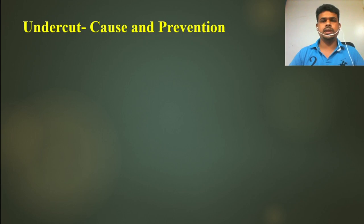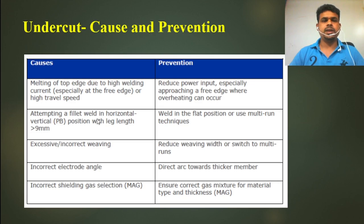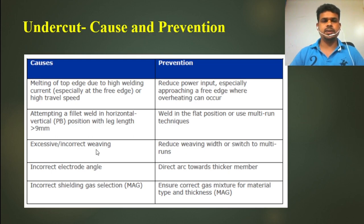What is the reason for undercut and how can we prevent it? Cause number one is due to high welding current, especially at the free edge, or high travel speed. The prevention is to reduce power input, especially approaching a phase where overheating can occur. The second cause is attempting a flat weld in vertical position — the prevention is to weld in the flat position or use a multi-run technique. Another cause is excessive or incorrect weaving — you can switch to multi-run to change the method.